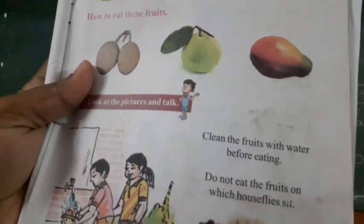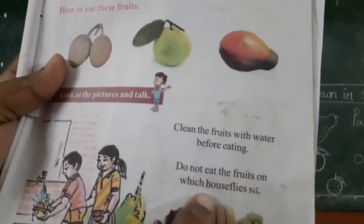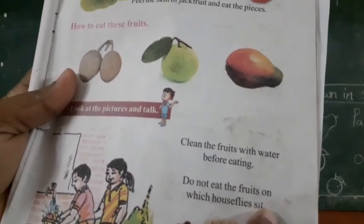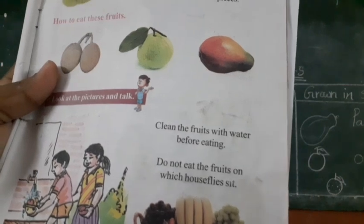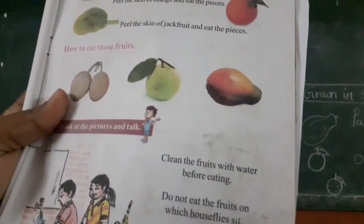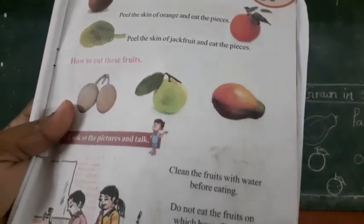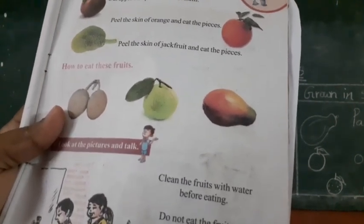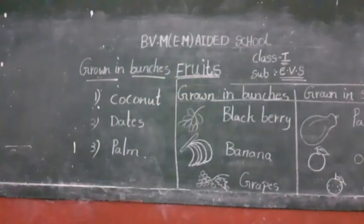Okay children, next. Another one - do not eat the fruits on which houseflies sit. Some fruits have so many houseflies on them. That fruit is very harmful to our health. Because of that we do not eat that type of fruit, or if we do eat it, we must and should wash it first, then eat it.